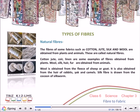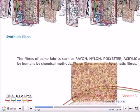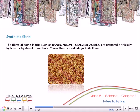Wool is obtained from the fleece of sheep or goat. It is also obtained from the hair of rabbits, yak and camels. Silk fibre is drawn from the cocoon of silk worm. Synthetic Fibres: Fibres such as rayon, nylon, polyester and acrylic are prepared artificially by humans through chemical methods. These fibres are called synthetic fibres.